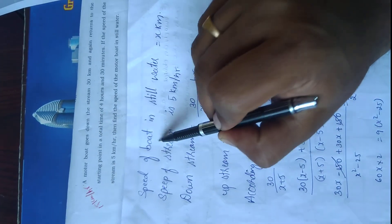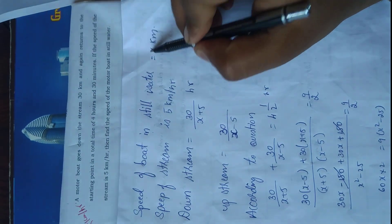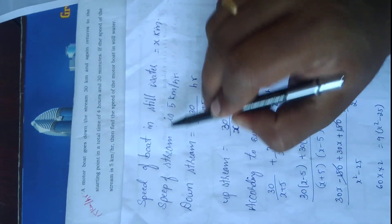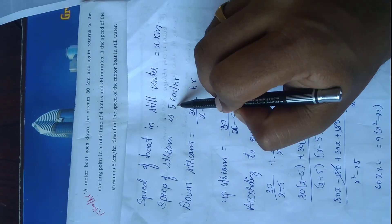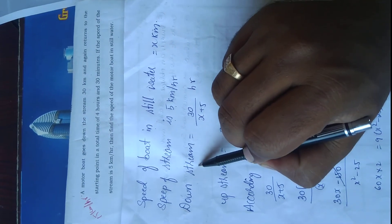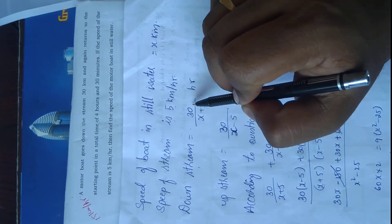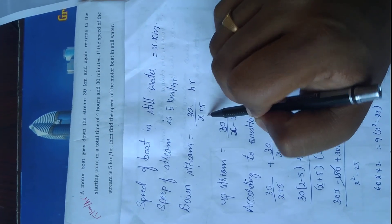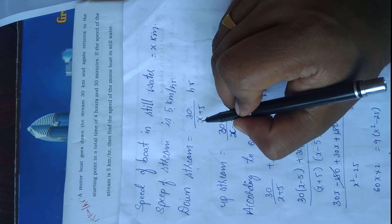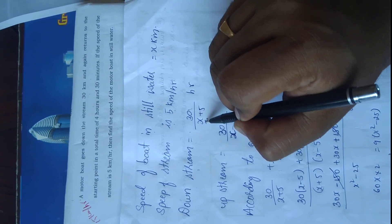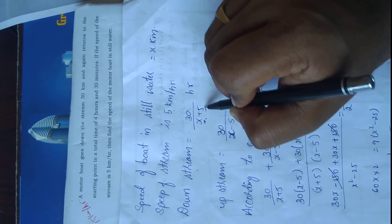The speed of the boat in still water we don't know, so we will take it as x. The speed of the stream is given as 5 kilometers per hour. Therefore, the speed downstream is equal to the speed of the boat plus the speed of the stream, that is x plus 5.